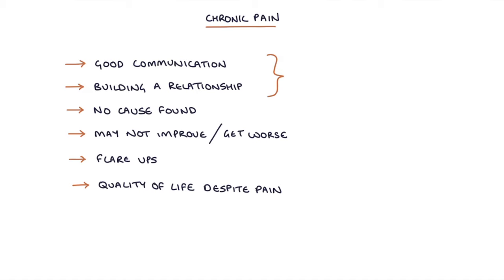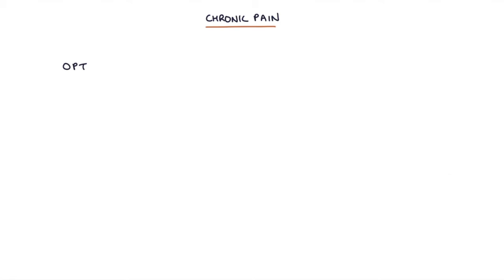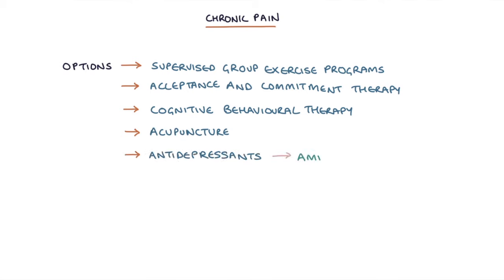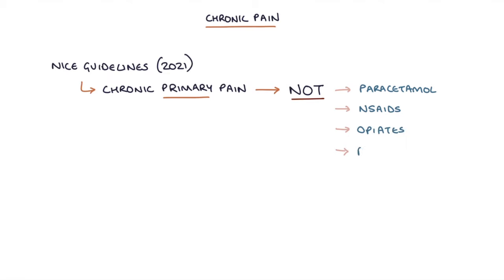Patients with chronic pain require a holistic, person-centred approach — exploring the impact on their life, discussing what they already do to manage the pain, and their ideas, concerns, and expectations. The options for managing chronic pain in the NICE 2021 guidelines are supervised group exercise programs, acceptance and commitment therapy (ACT), cognitive behavioural therapy (CBT), acupuncture, and antidepressants such as amitriptyline, duloxetine, or an SSRI. Notably, NICE 2021 advises that for chronic primary pain, patients should not be started on paracetamol, NSAIDs, opiates, pregabalin, or gabapentin.